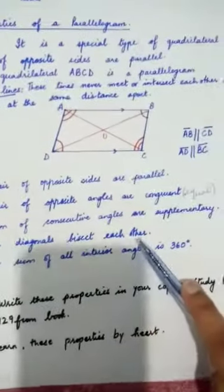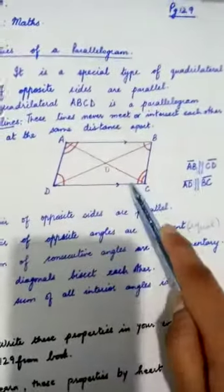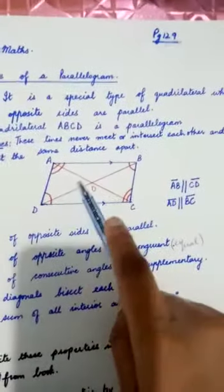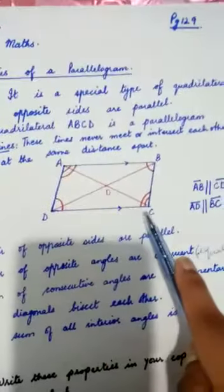The diagonals bisect each other. The diagonals, if you see here, are AC and BD. Children, remember that a diagonal is a line segment that joins the opposite vertices of any shape.